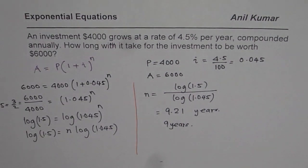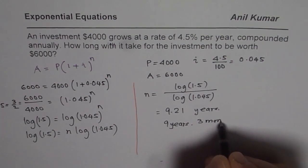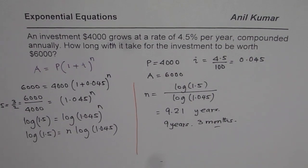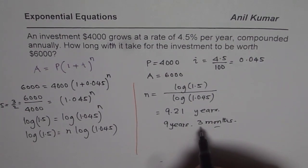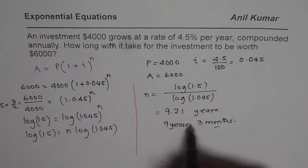So approximately nine years and you can say three months. Actually I should have written two and a half months. So it is not nine years and two months - that is what I'm trying to say. When it is 9.21 years it is more than two months, so strictly it was two point four months, two and a half months. I just rounded to three months.